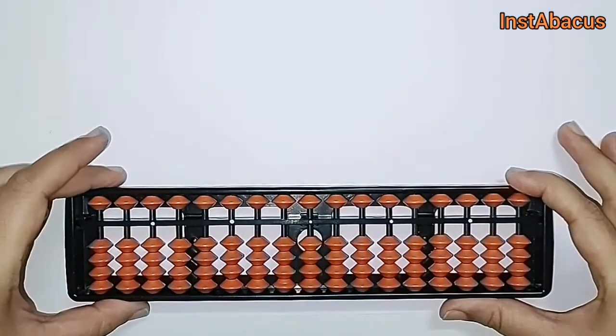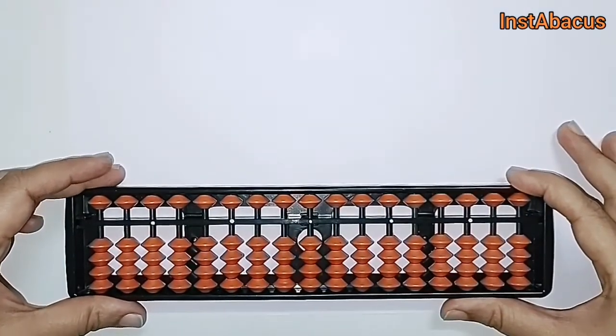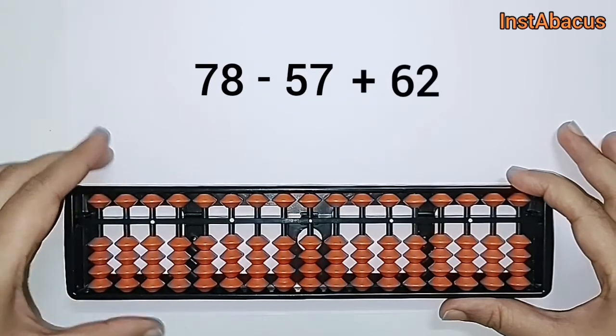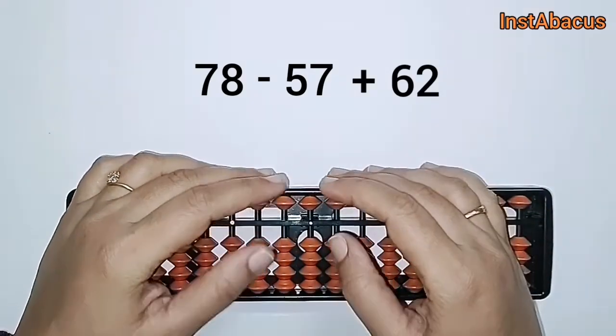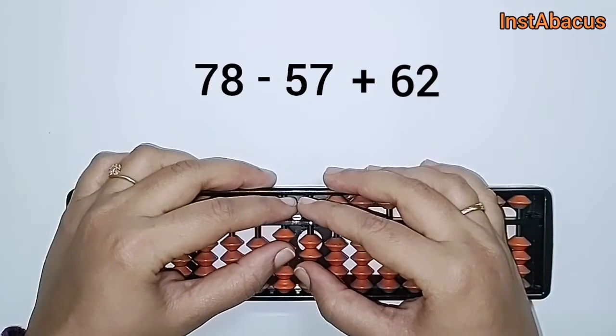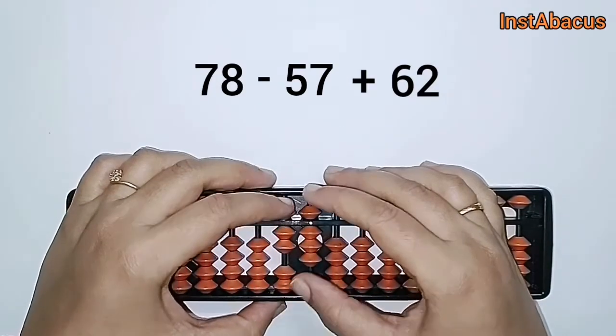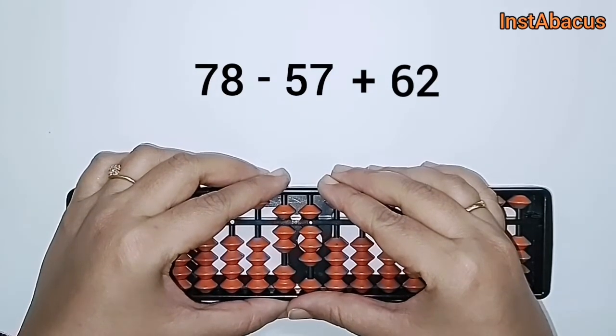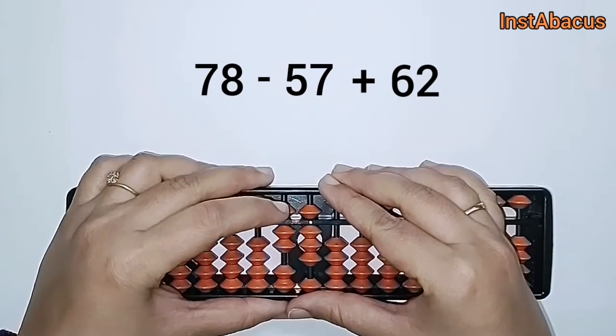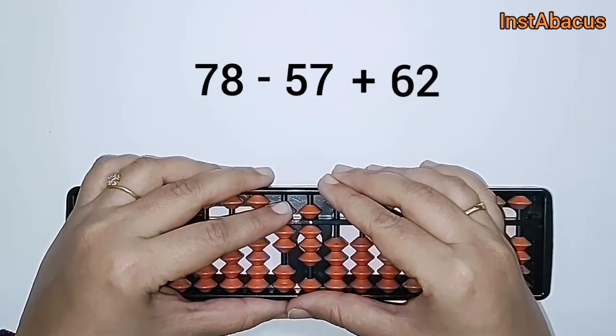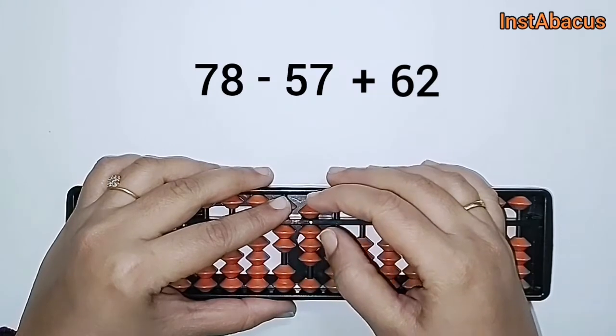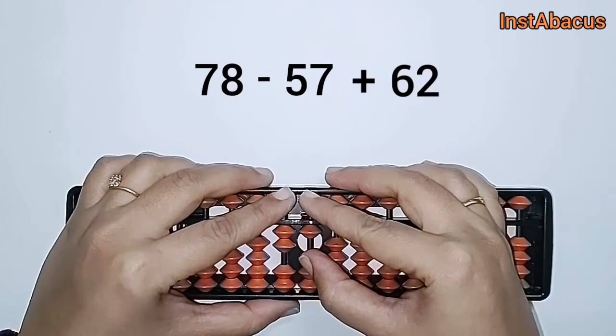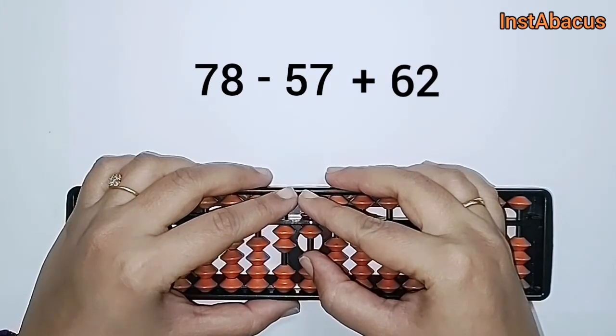Next one: 78 minus 57 plus 62. So, 7 here and 8 here, 78 on our abacus. Now from this we are going to subtract 57. For that, this heavenly bead will move away along with this heavenly and these two earthly beads away from the answering bar to subtract 57.